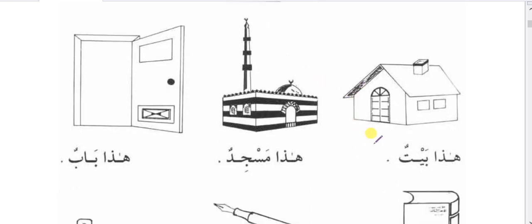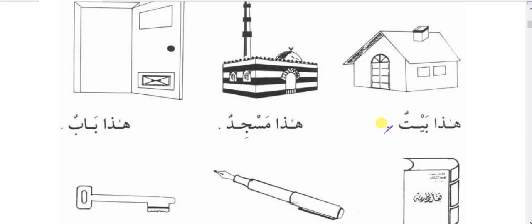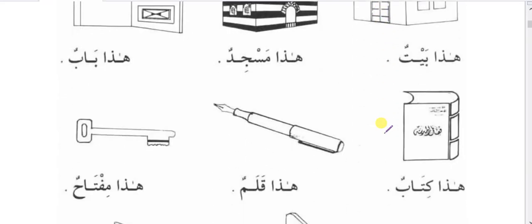When I say haza baitun, it means 'this is a house,' so the house is close to us. Always remember there must be similarities between isma ishara and musharunile: if musharunile is wahid, isma ishara must be wahid; if musharunile is tasniya, isma ishara should be tasniya; if jama, isma ishara should be jama. The same goes for muzakkar and muannas.